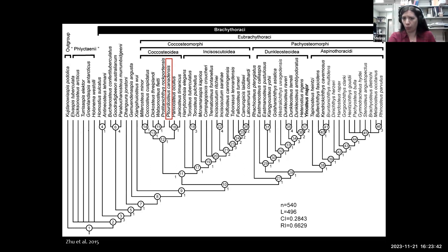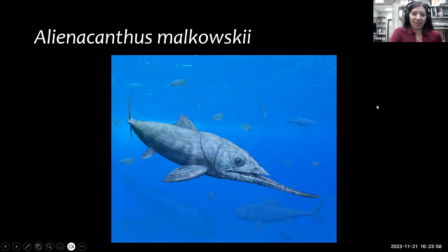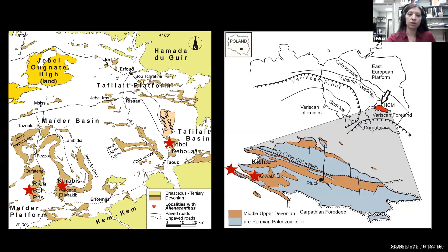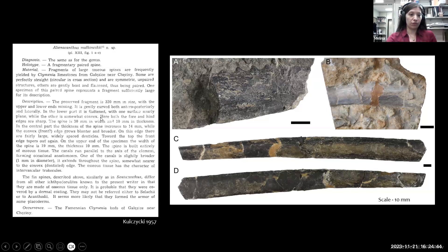The most interesting taxon, currently under review, is Elinacanthus — take in how beautiful it is with that long lower jaw. This animal comes from two places: Morocco and the Holy Cross Mountains in Poland, dating to the Famennian — just a bit later in the thylacosephalon layer. The map shows some specimen localities in Morocco, and a small map of Poland shows where the Holy Cross Mountains are located.